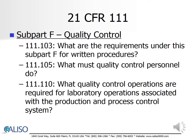Subpart F, Quality Control, requires that quality control personnel must ensure that the manufacturing, packaging, labeling, and holding operations ensure the quality of the dietary supplement and that the dietary supplement is packaged and labeled as specified in the master manufacturing record. Quality control personnel must perform operations that include approving or rejecting all processes, specifications, written procedures, etc. They are also responsible for reviewing and approving all laboratory control processes associated with the production and process control system.